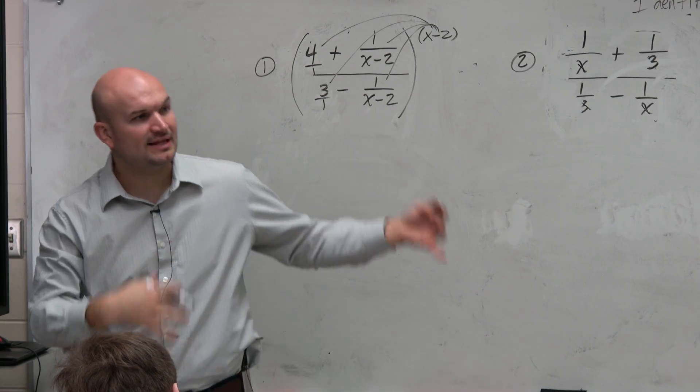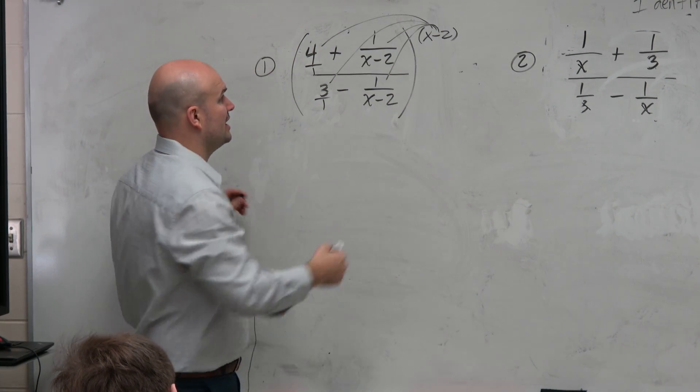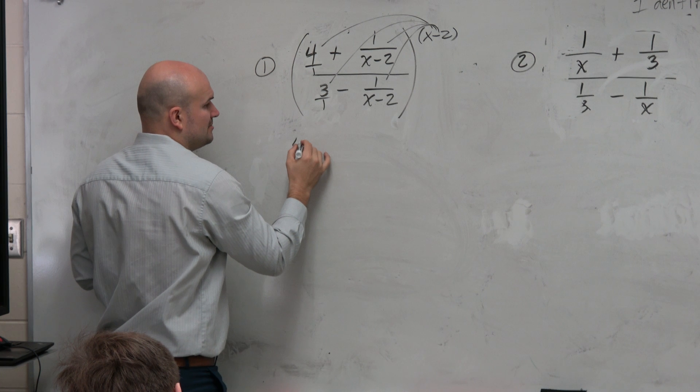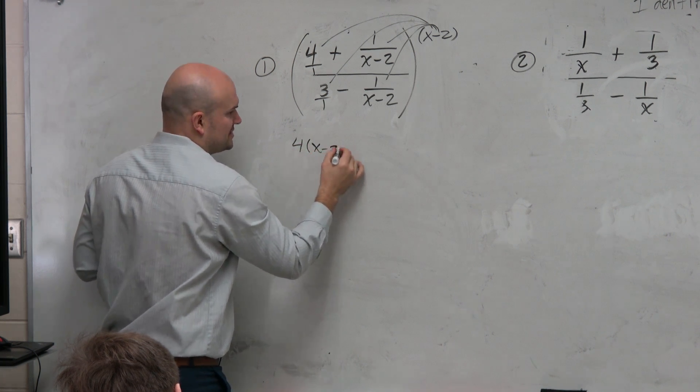Now I'm not going to rewrite that because hopefully we can do a little bit of this in our head. If I multiply x minus 2 times 4, I'm just going to be left with 4 times x minus 2.